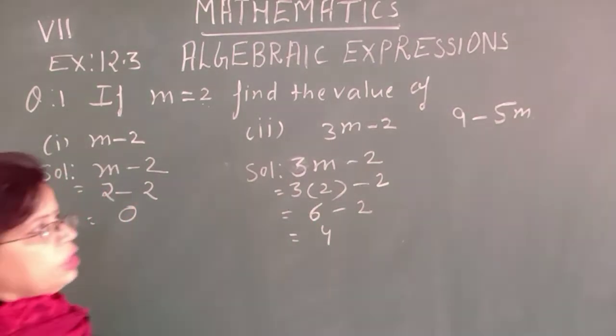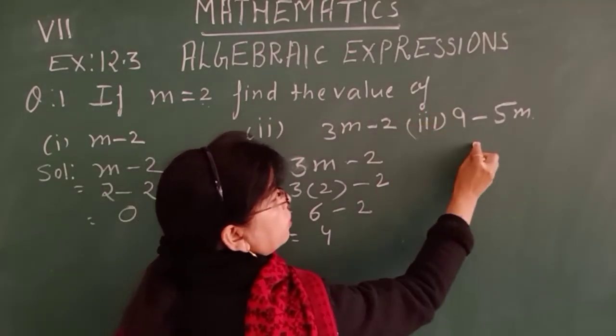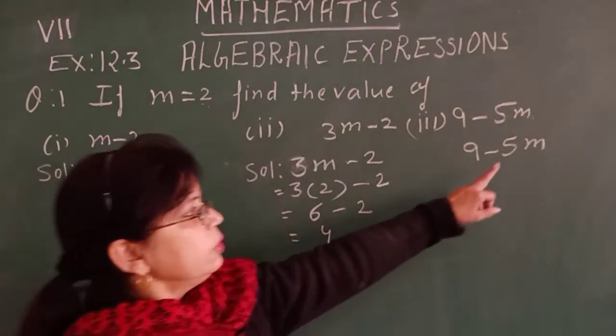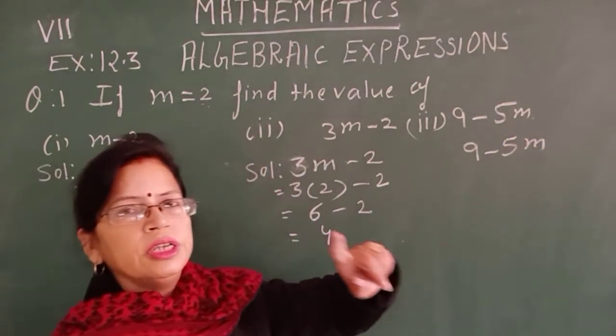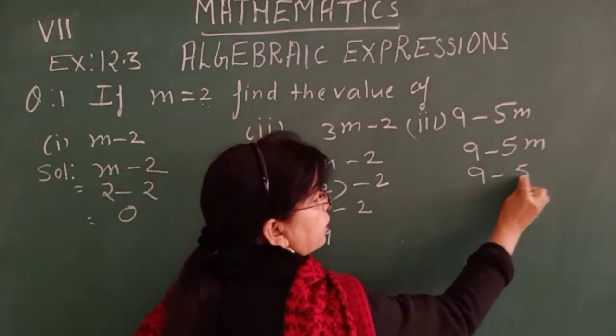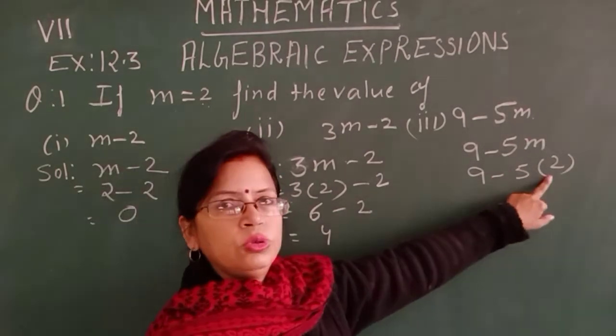And now third part, question number 1, 9 minus 5m. In place of m we will use 2. So 9 minus 5 multiply 2. So 5 multiply 2 is 10.